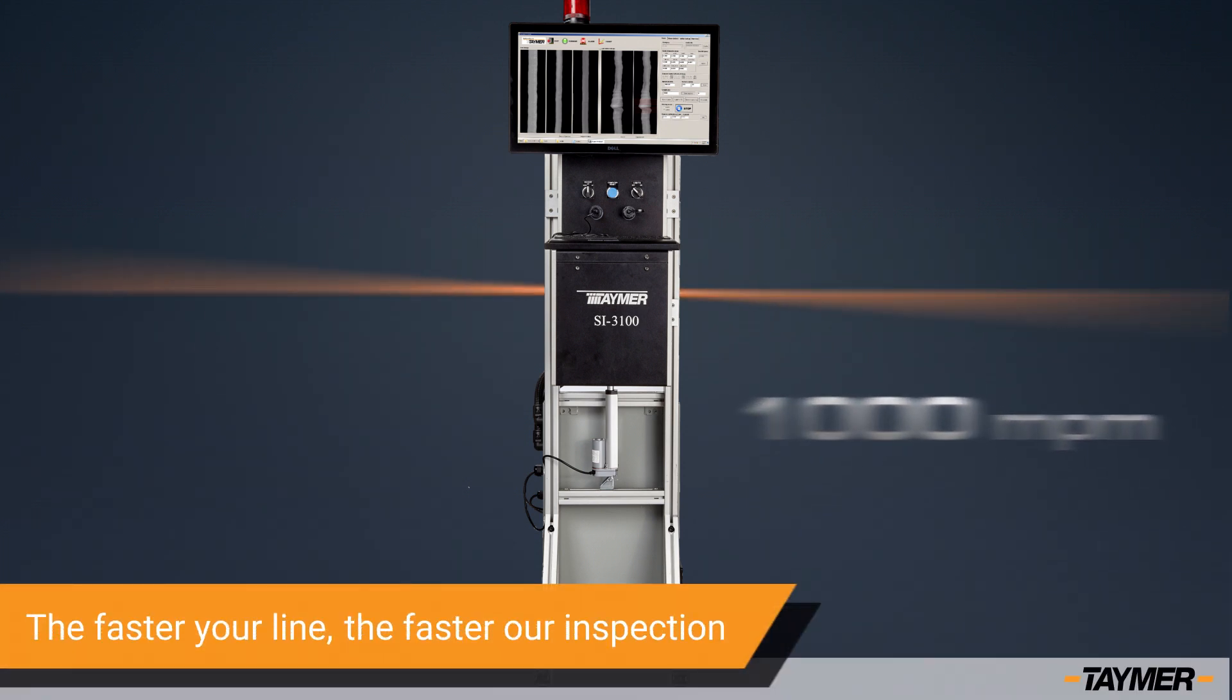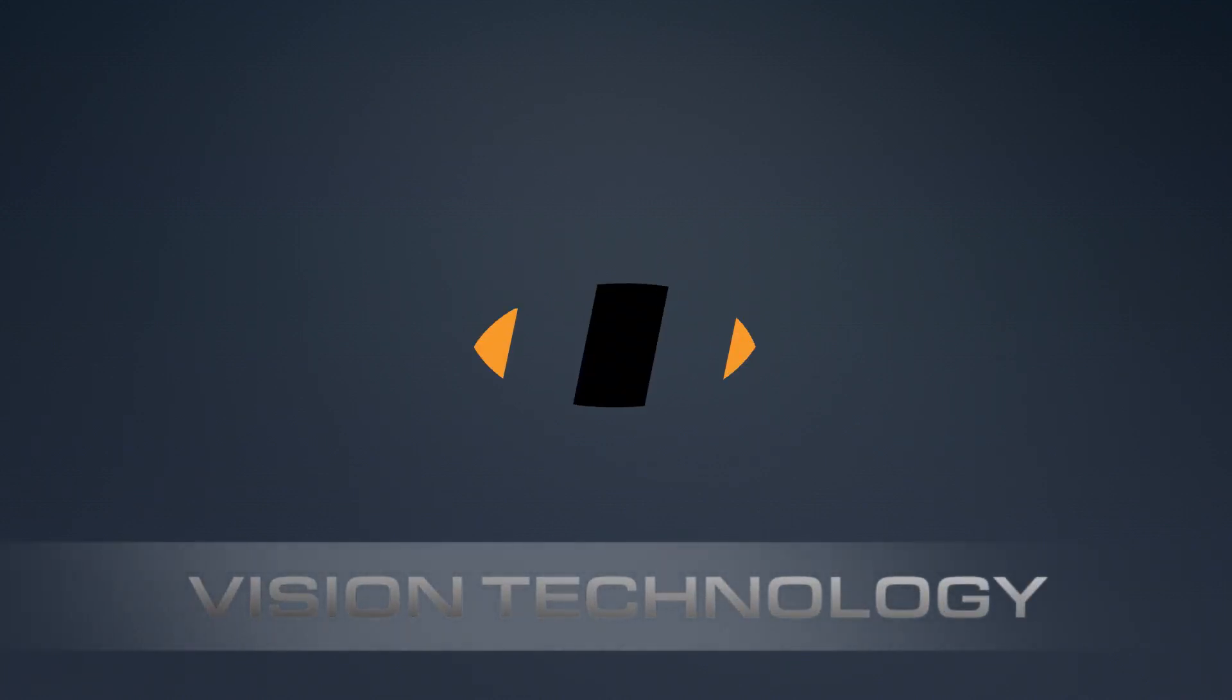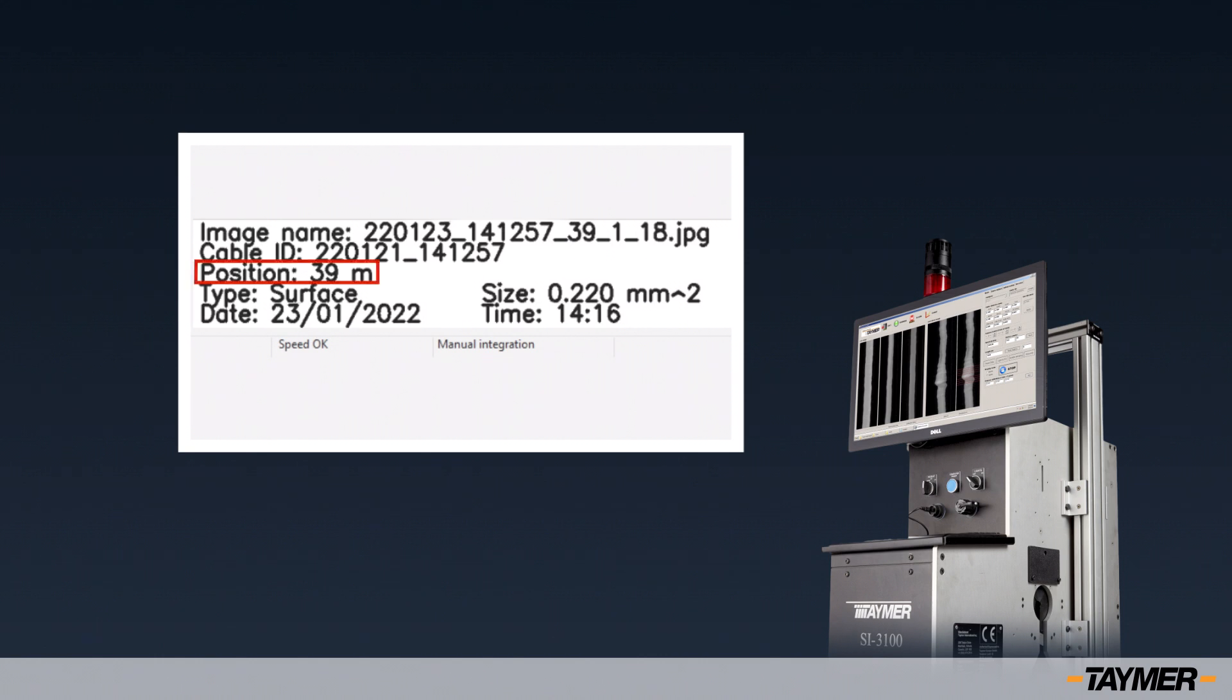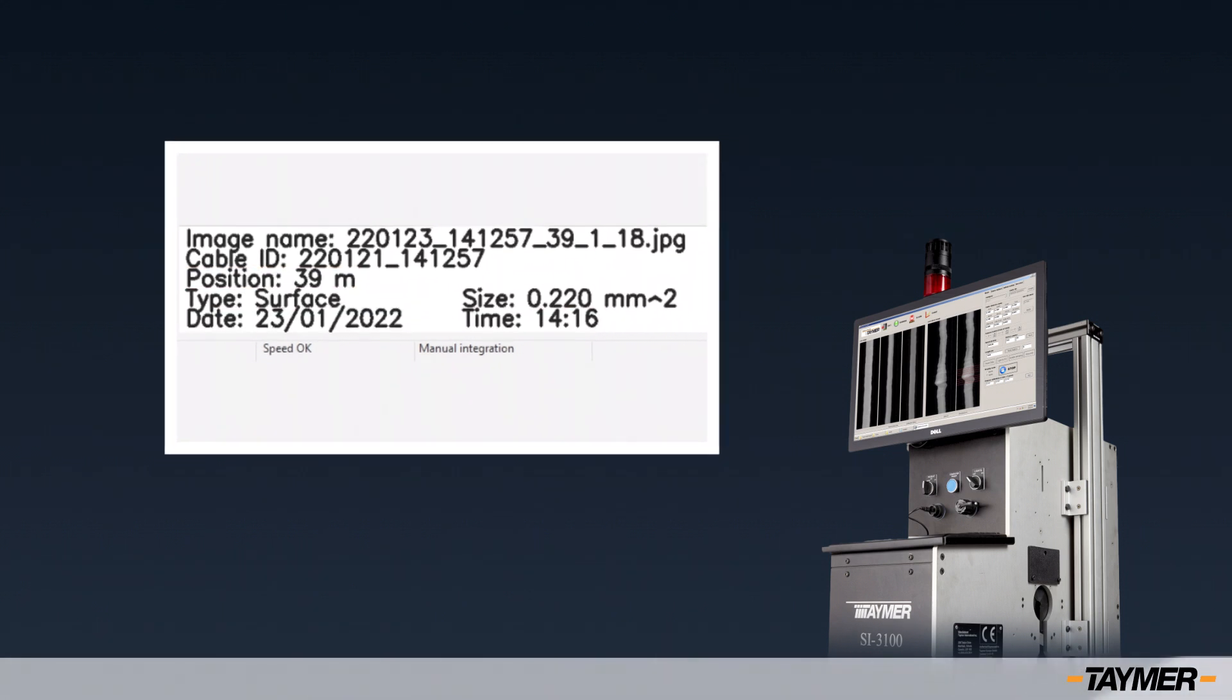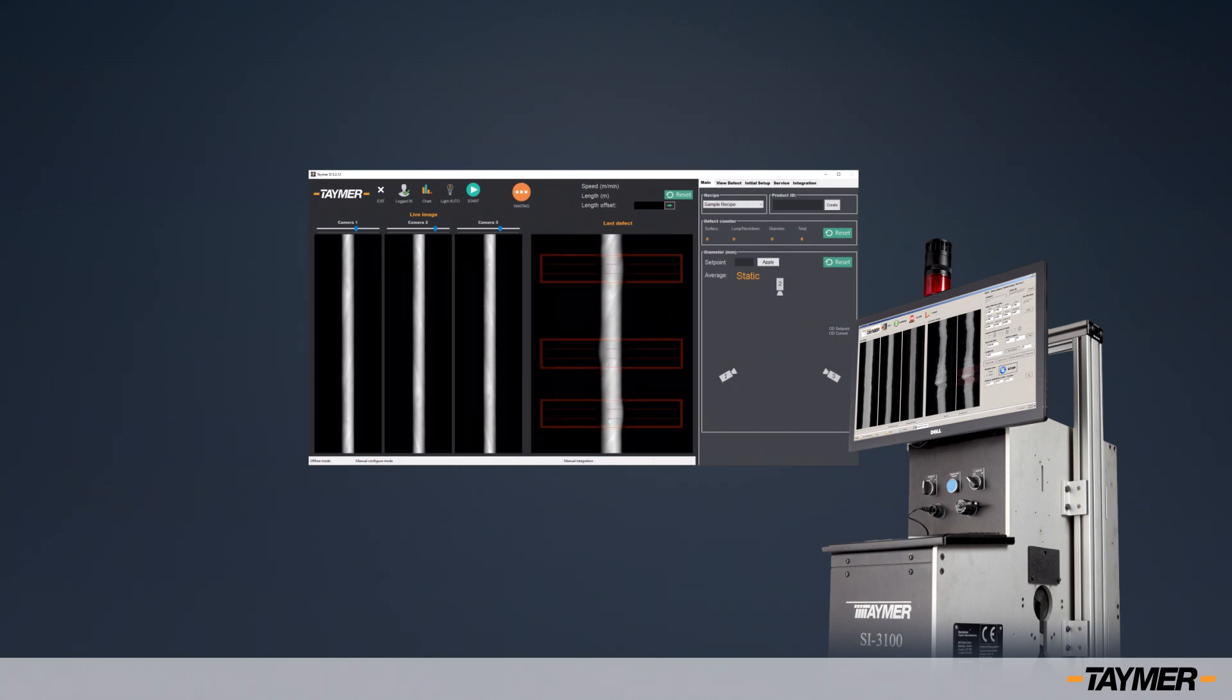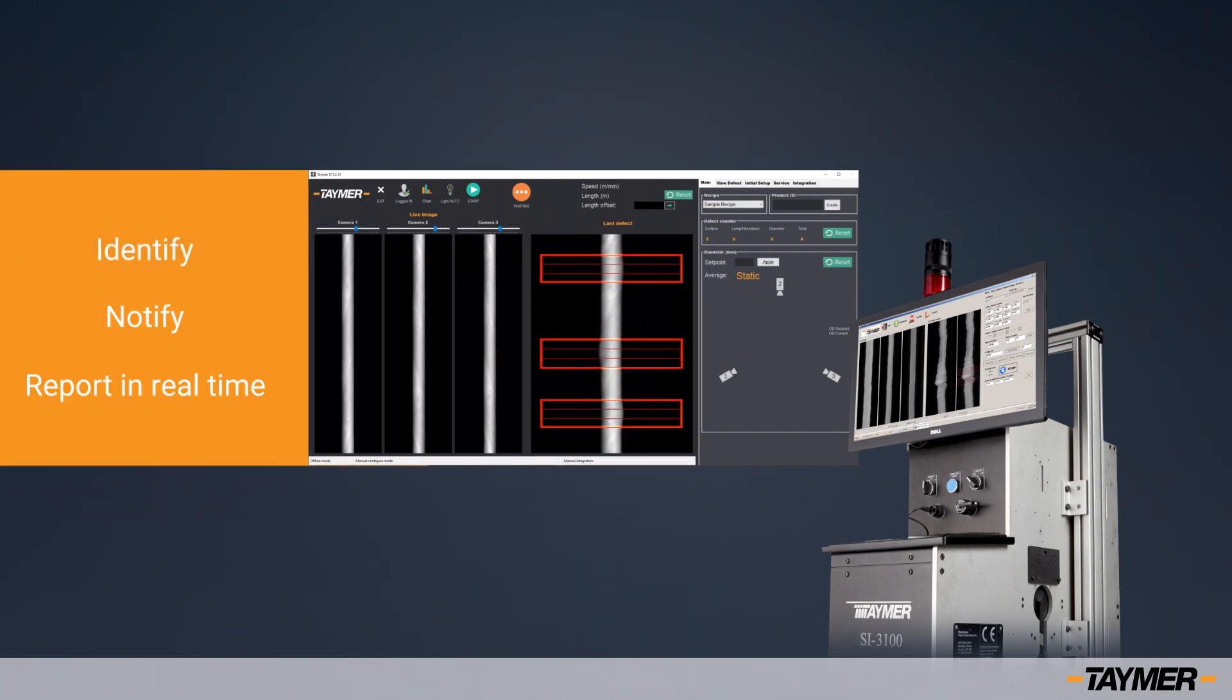Taymer vision technology includes defect location details. Every alarm is recorded with a position and time stamp to be easily tracked and resolved. Taymer's surface and dimensional defect inspection products identify, notify, and report in real time.